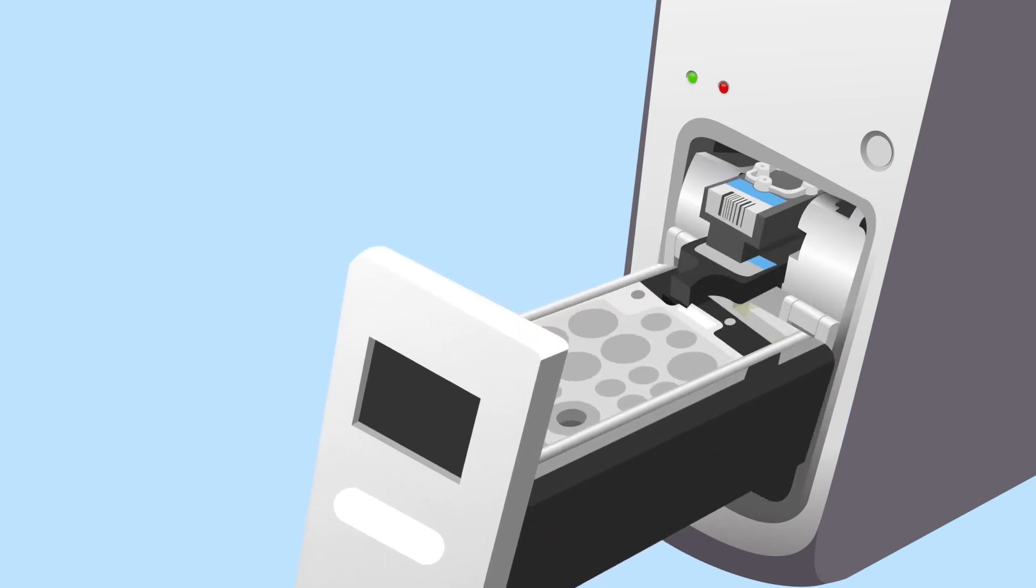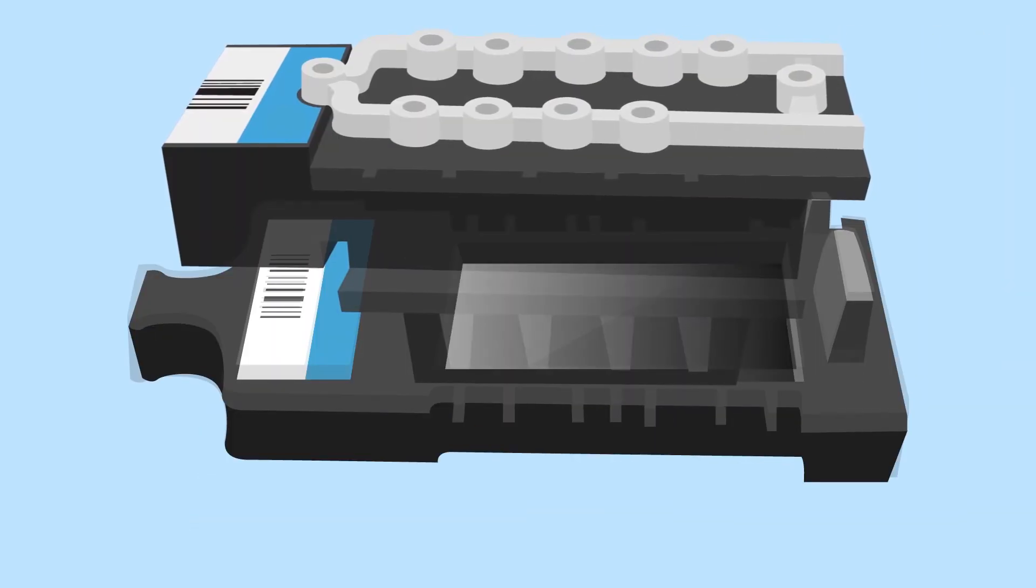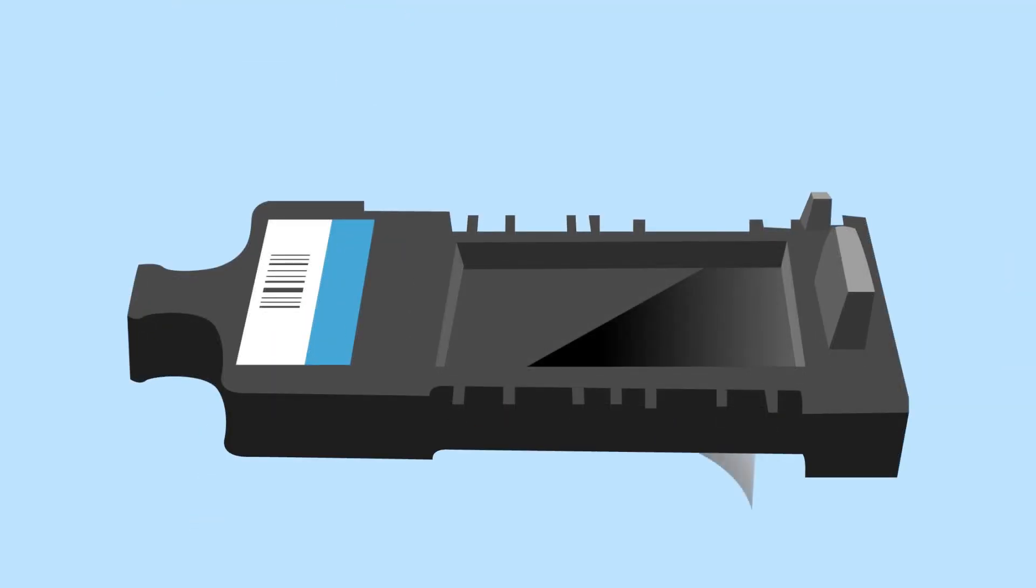When sample processing is complete, remove the test cartridge and separate the test substrate. Remove the protective tape and place the test substrate on the Verigene Reader for the final analysis step, which takes about 10 seconds.